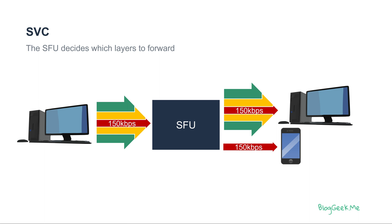This increases a bit the use of bitrate that we have from a single stream, but it takes less bitrate than using Simulcast, because we're encoding once and we're using previous layers in our encoding of higher layers of the data.